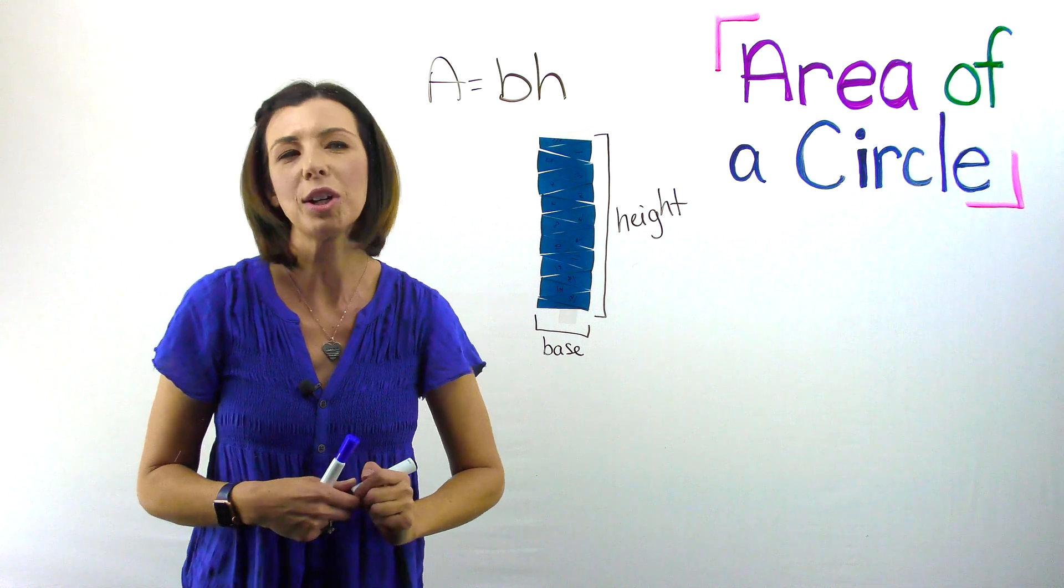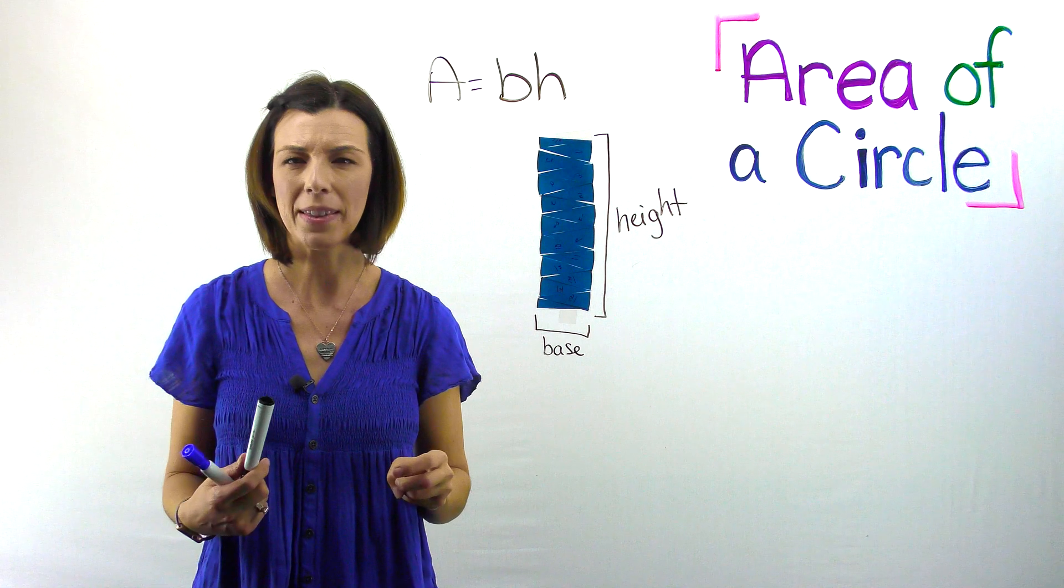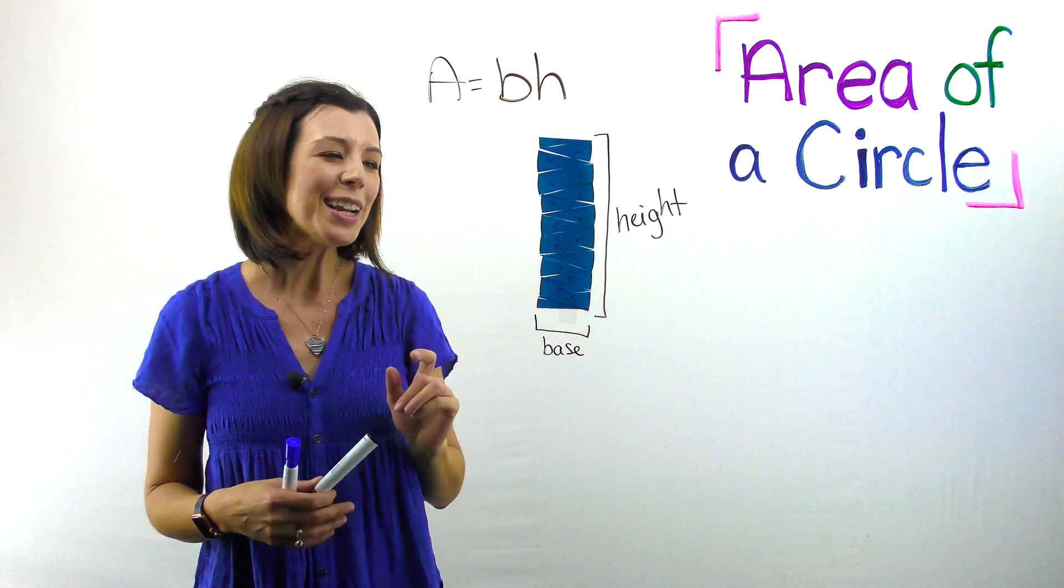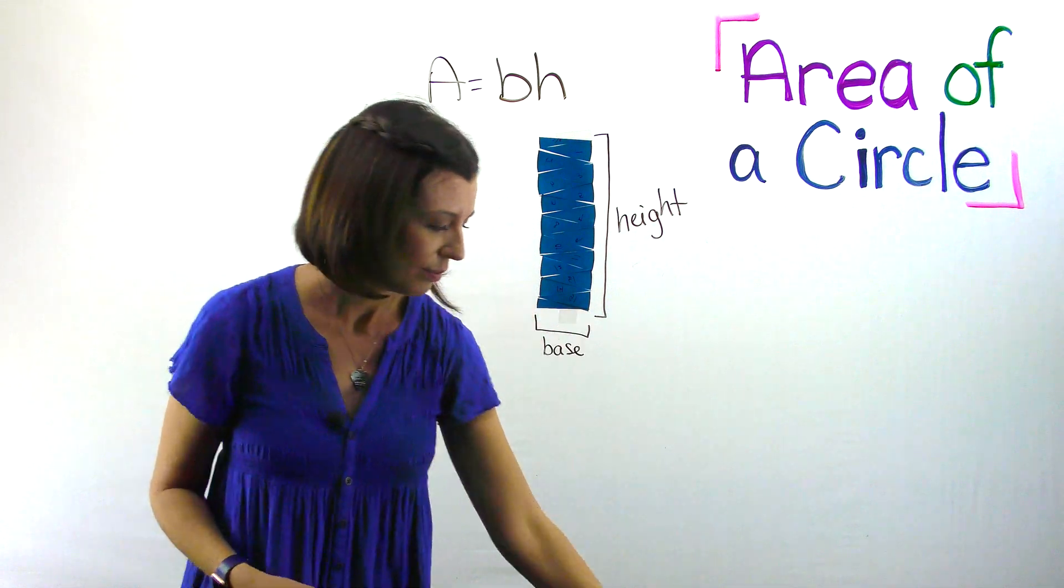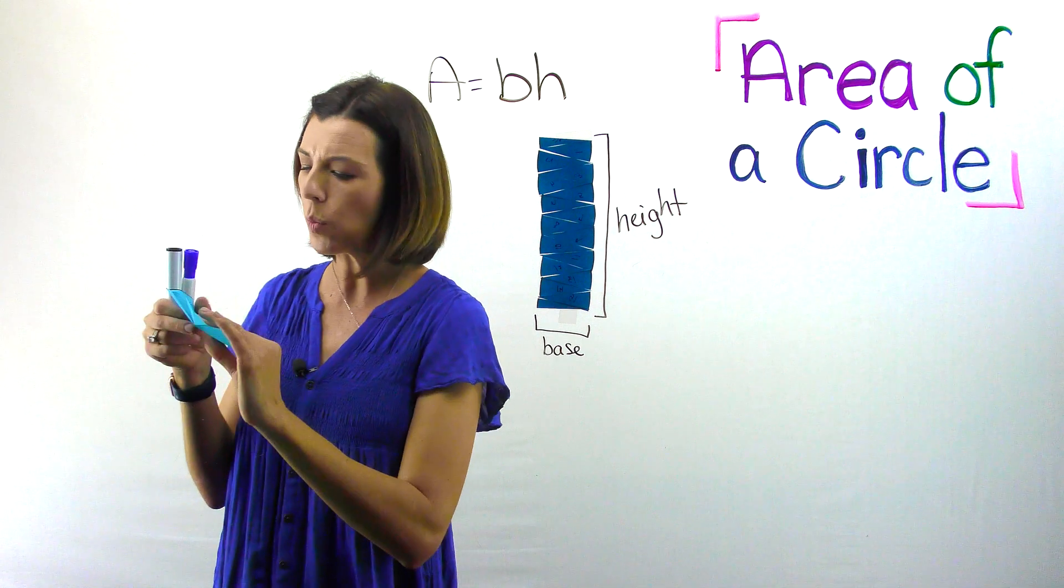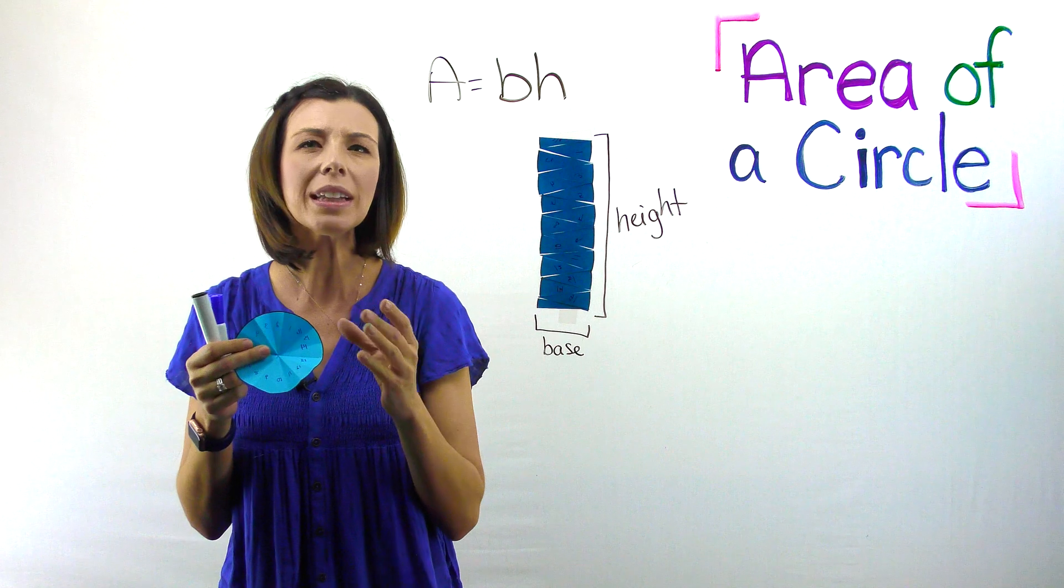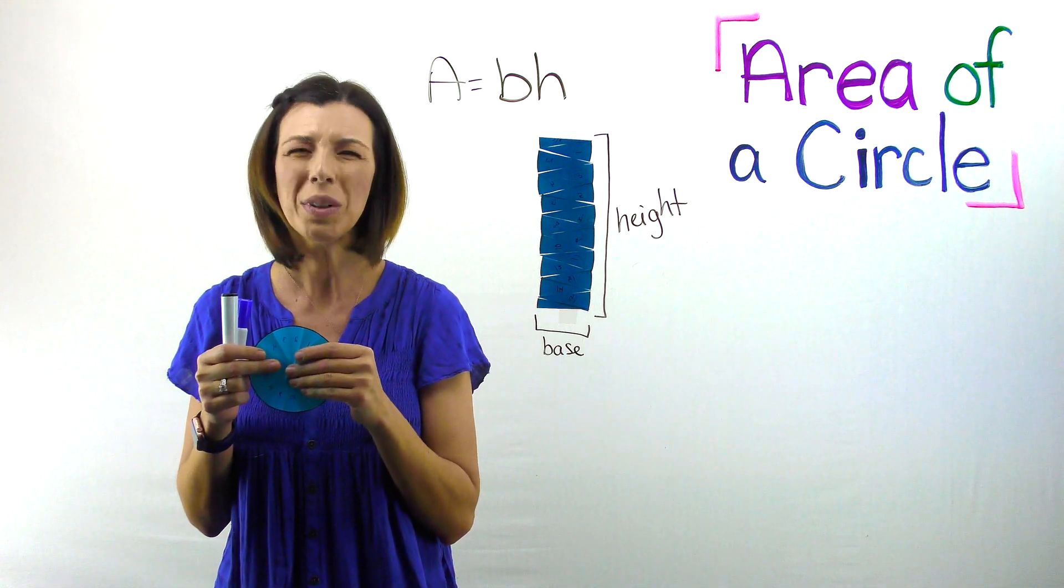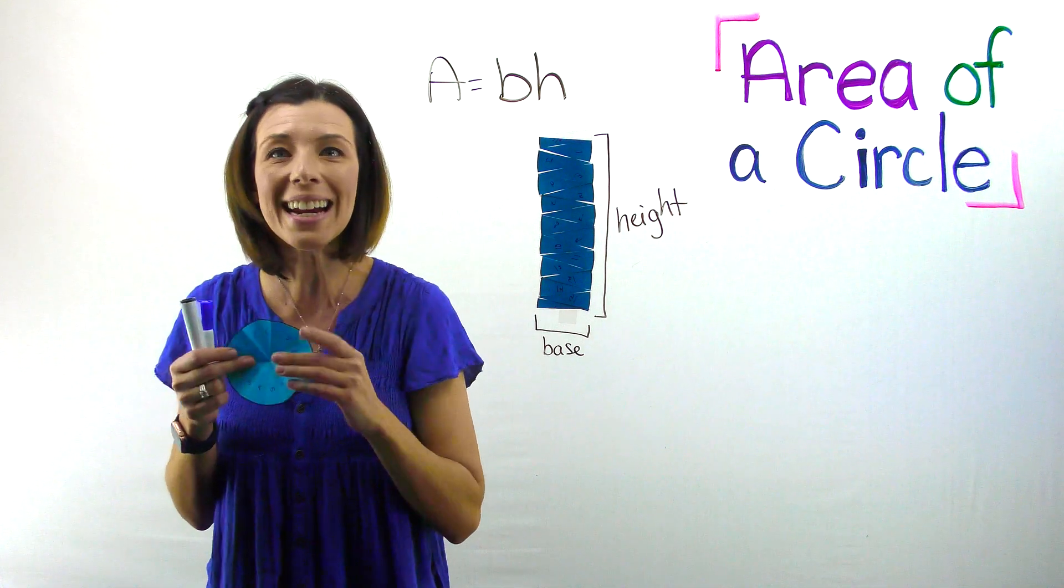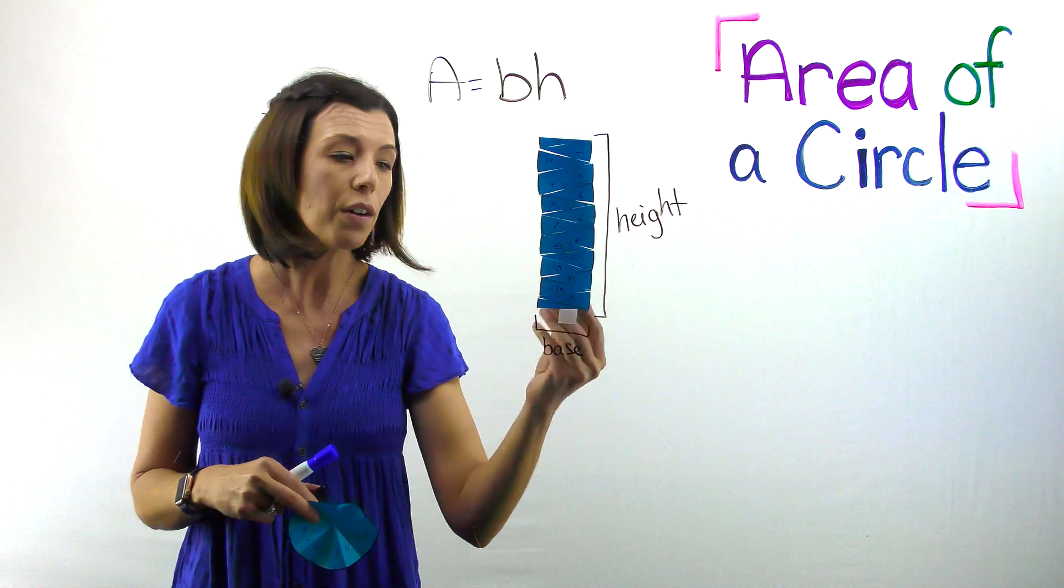Here's my next question for you. What is the base in this case? Now you might be thinking, Marsha, I don't know, I don't have a ruler. What does this represent? Grab your other circle for a minute and take a look at when we cut this circle along each of those lines. What were we really cutting on? What's the name of that? I'll give you a hint, it starts with an R. A radius, that's right. So the base is really the length of the radius.